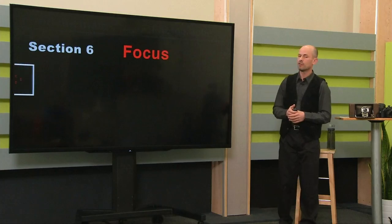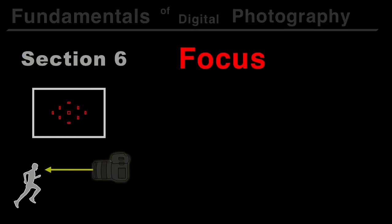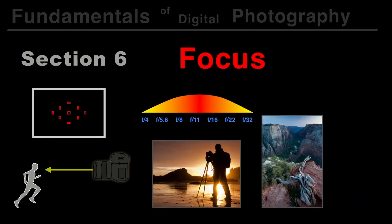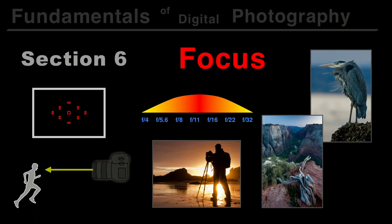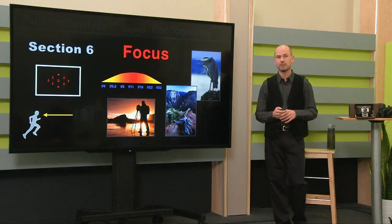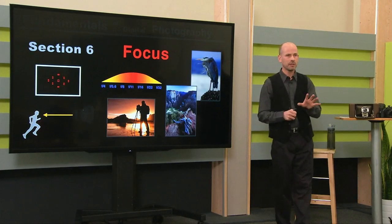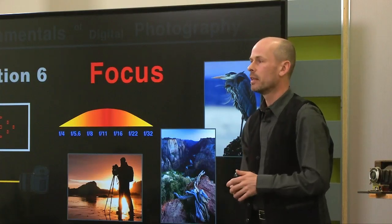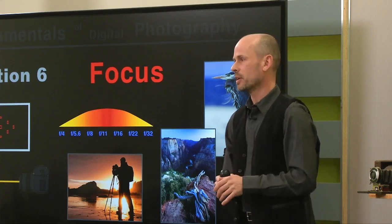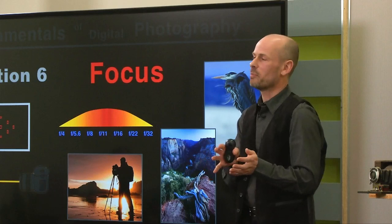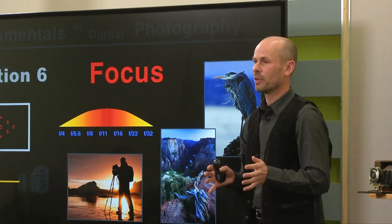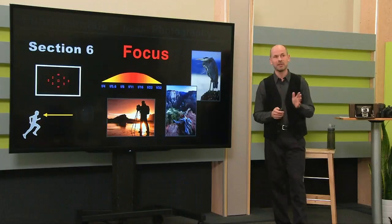Section 6 is on focusing — another one of my favorite sections. We're going to talk about all the different things in the camera to help you focus, from choosing focusing points to different focusing modes. We'll talk about lens sharpness and how to get maximum and minimum depth of field. Focus is the one thing you do out in the field that you absolutely have to get right — there is no computer software that is going to fix an out-of-focus picture. If you screw this up, there is no recovery other than going to reshoot it, and sometimes that's not possible.